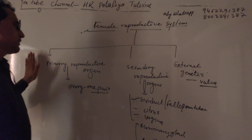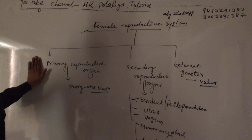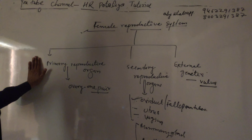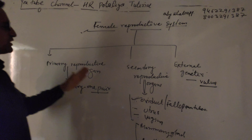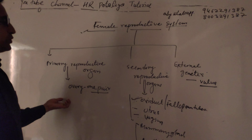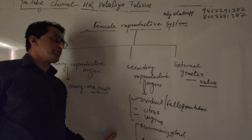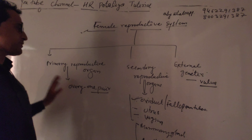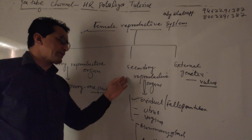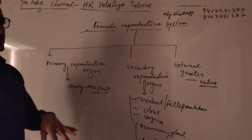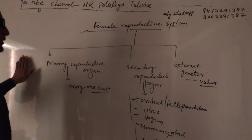Now we will discuss all these parts one by one with their functions and diagrammatic representation, because sometimes a diagram will be given and you are asked to label parts and functions, or the question may ask: if part X is removed, what is the effect on the reproductive system?